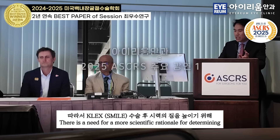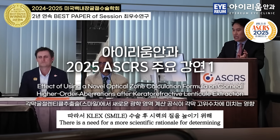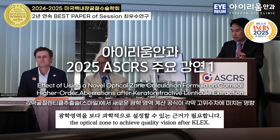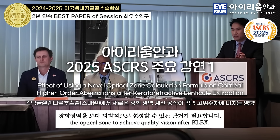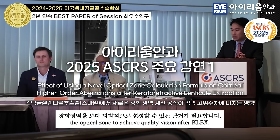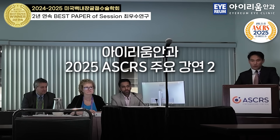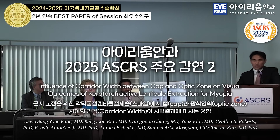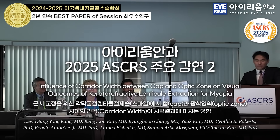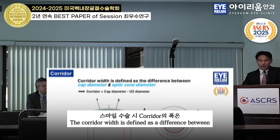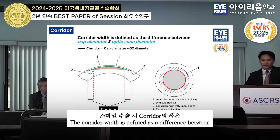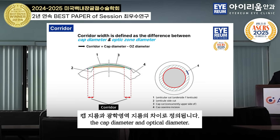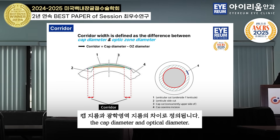There is a need for a more scientific rationale for determining the optical zone for quality vision after SMILE. The title is: Influence of Corridor Width between Cap and Lenticule on visual outcomes of SMILE. The corridor width is defined as the difference between the cap diameter and lenticule diameter.